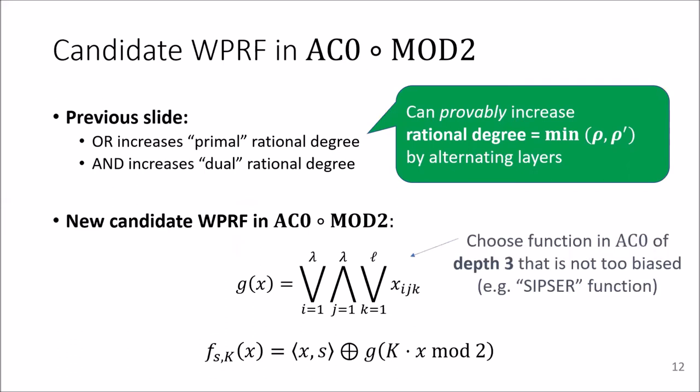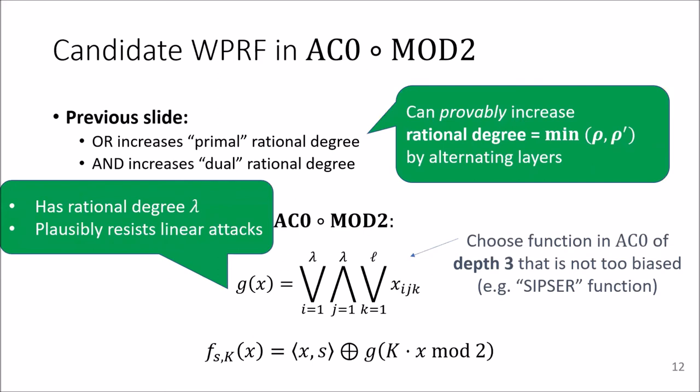It turns out that we only have to add one more layer compared to the function of Akavia et al. And again, we have to choose the fan-in such that the function is not too biased.